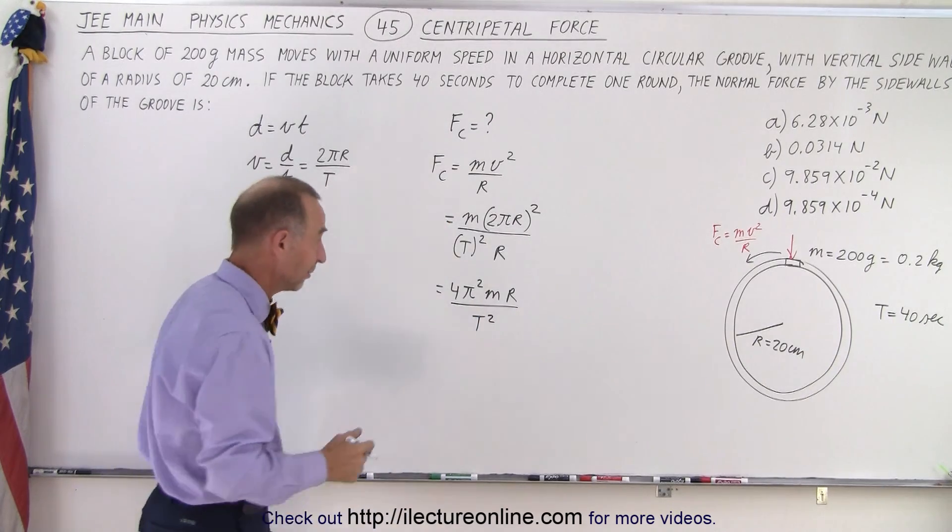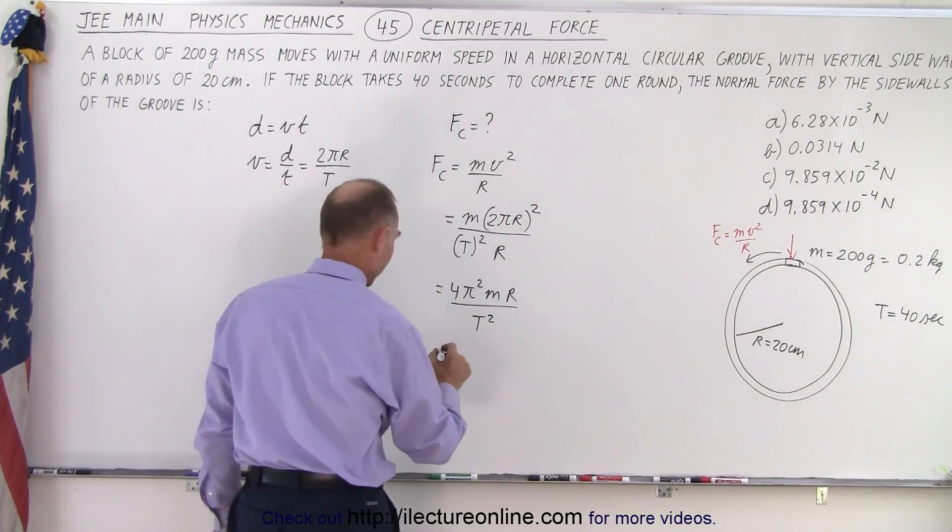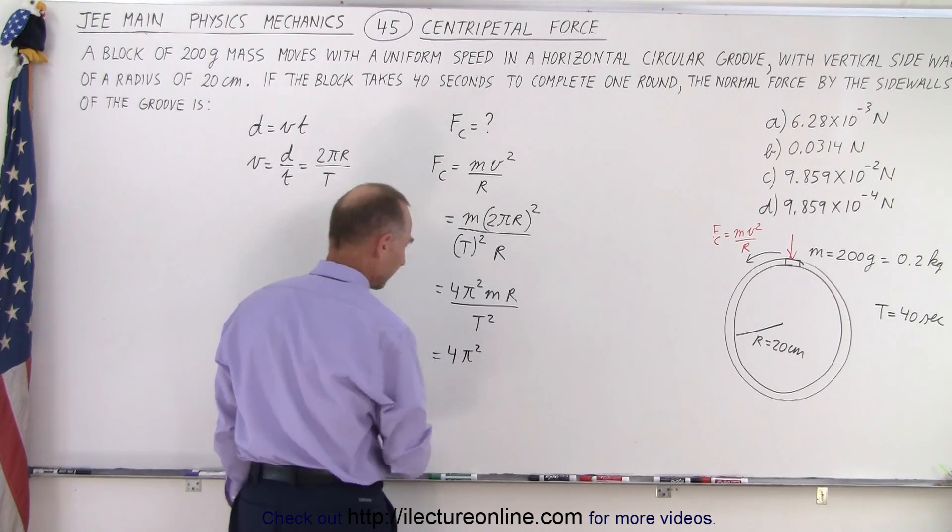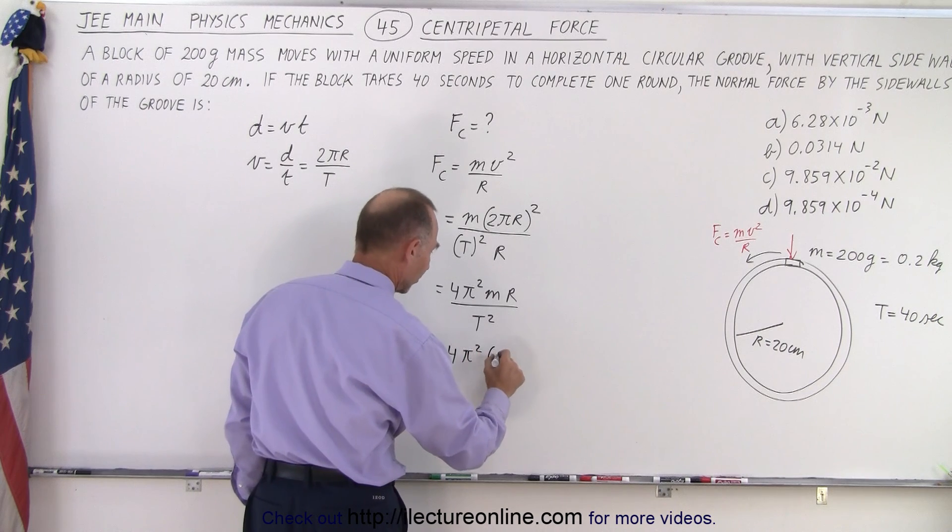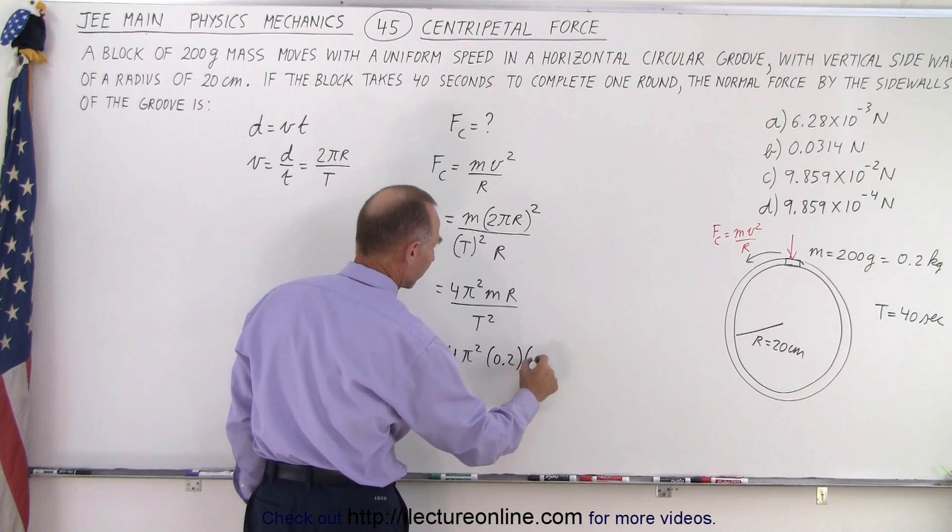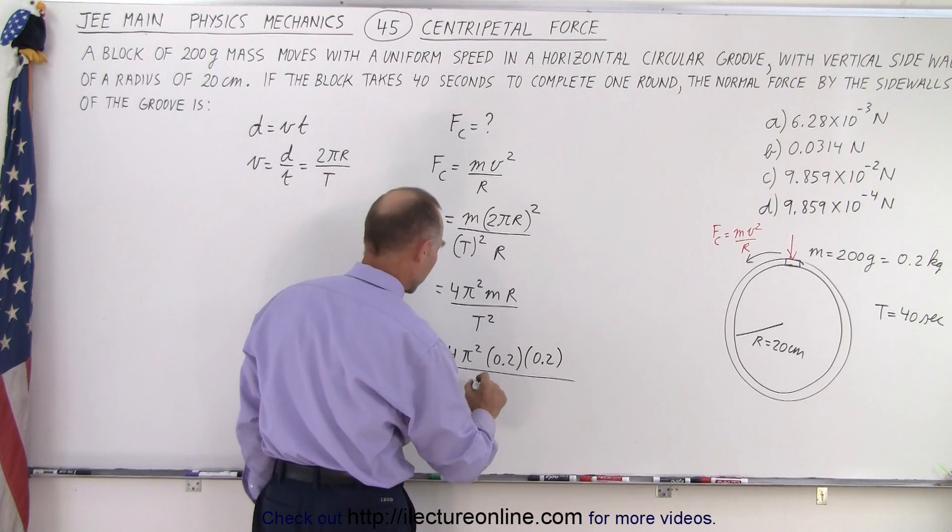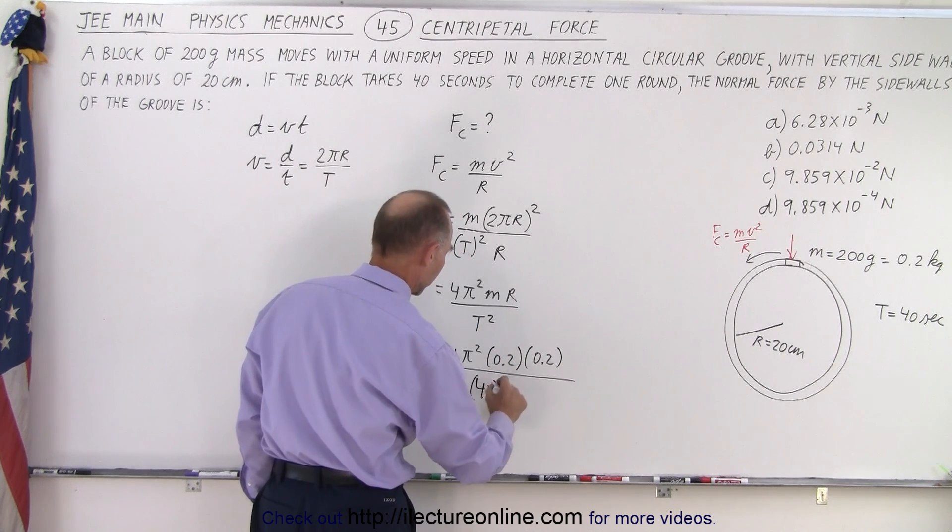And now we just plug in the numbers and see if we can come up with something that's close to one of those. So this is equal to 4π² times the mass, which is 0.2, times the radius, which is 0.2, divided by the period, which is 40 squared.